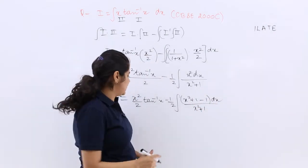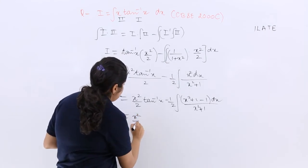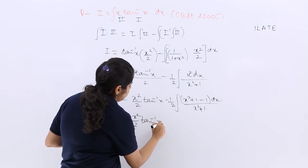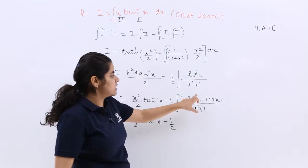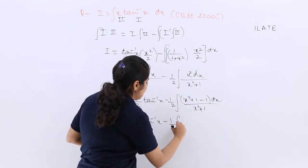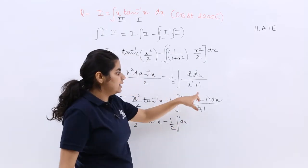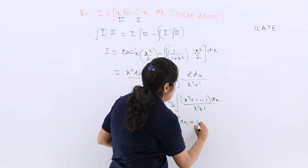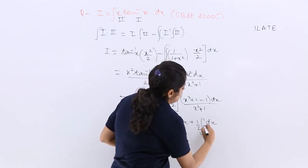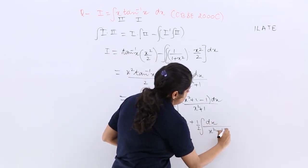So after this step let us see what to do. It is x square by 2 tan inverse x minus 1 by 2 x square plus 1, x square plus 1 getting cancelled dx minus minus becoming plus. So plus 1 by 2 integration dx upon x square plus 1.